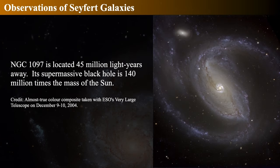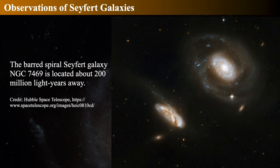Another wonderful Seyfert galaxy is NGC 1097 — it has an extraordinarily bright nucleus and a bar-like structure, about 45 million light years away. This picture was taken by the European Southern Observatory's VLT. This is another Seyfert galaxy, NGC 7469, the one in the upper right. It's actually colliding with the one in the lower left and is almost 200 million light years away. This is a Hubble Space Telescope image. Again, we see a very bright, compact nucleus.